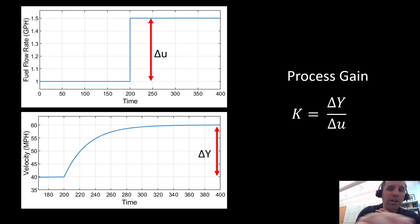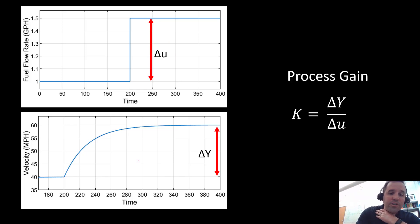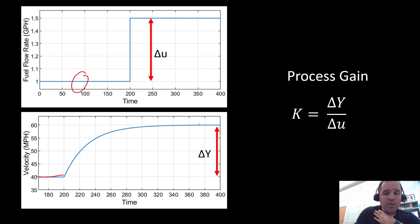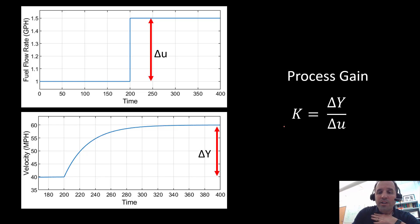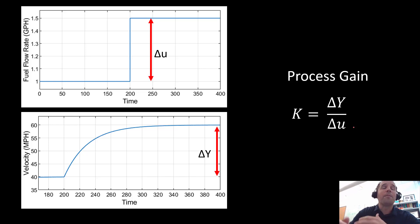We change the fuel flow rate with a step to get delta u, then measure the new steady state. With the initial fuel flow rate we have a steady state of 40 mph; after the step change we get a new steady state of 60 mph. We then calculate the process gain, which is the ratio of the change in output (delta y) relative to the change in input (delta u).